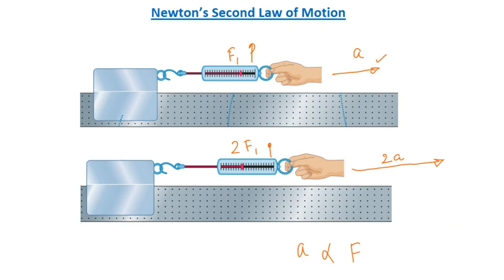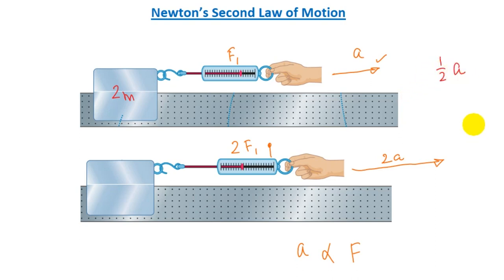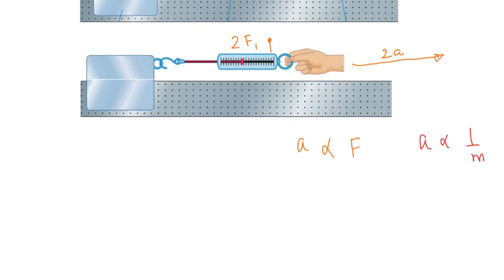Repeat the experiment but now double the mass of the cart to 2m, keeping the force the same at F1. We observe the acceleration becomes one-half of a. Increasing the mass halved the acceleration, so we conclude that acceleration is inversely proportional to mass.